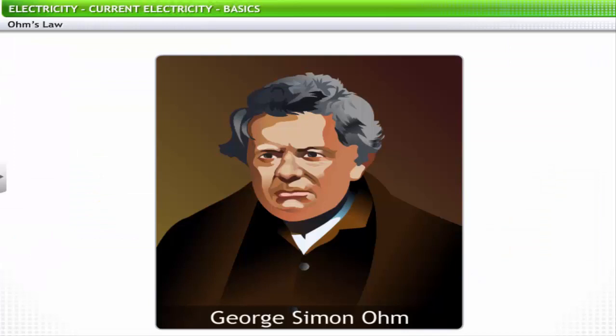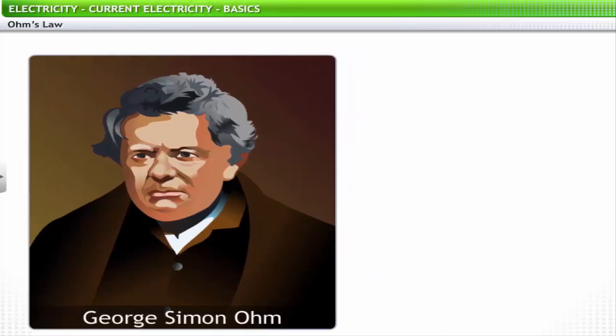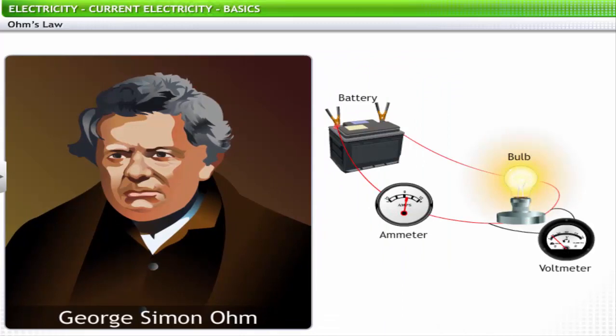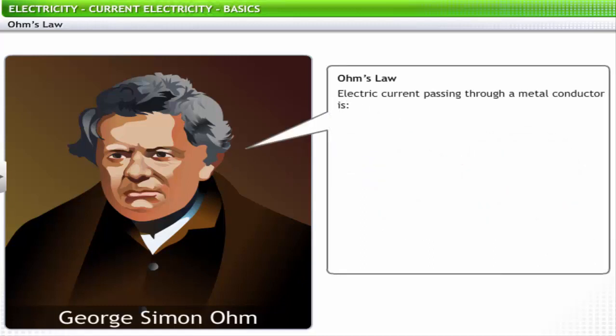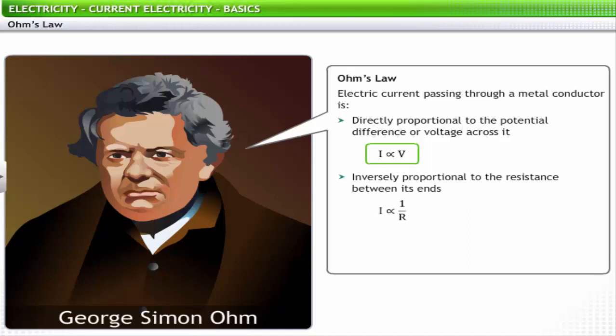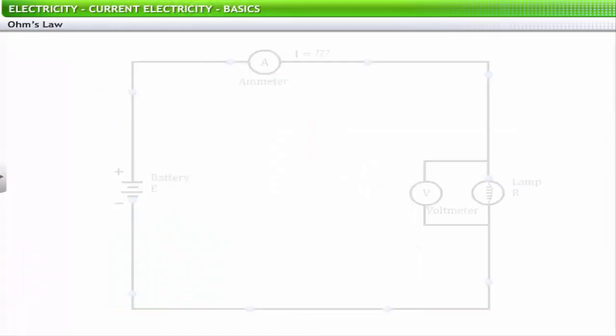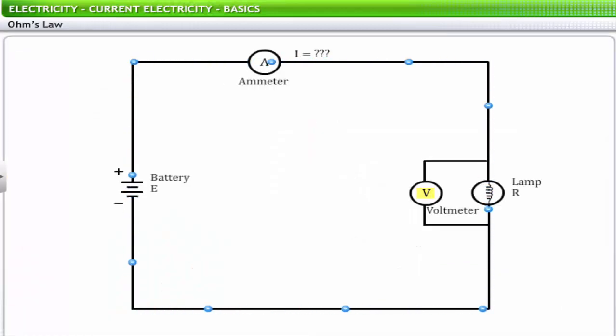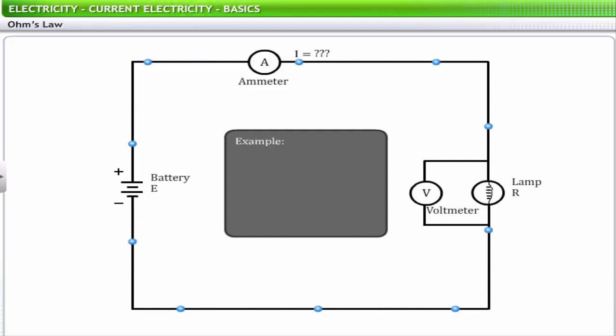In 1827, a German scientist George Simon Ohm conducted a series of experiments to study the variations in electric current when the potential difference across the conductor was changed. With the findings of his experiments, he postulated Ohm's law, which explains the relationship between electric current, voltage, and resistance. Ohm's law states that electric current through a metal conductor in a circuit is directly proportional to the potential difference or voltage across it and inversely proportional to the resistance between its ends. Thus, according to Ohm's law, voltage V is equal to the product of electric current I passing through the conductor and the resistance R offered by it.